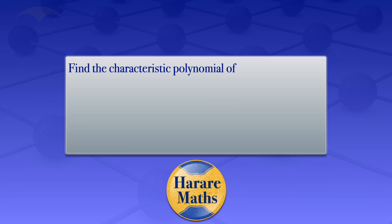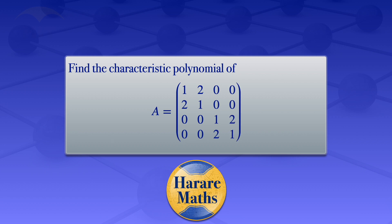In this tutorial, I'm going to find the characteristic polynomial of the 4 by 4 matrix, which has elements 1, 2, 0, 0, 2, 1, 0, 0, 0, 0, 1, 2, 0, 0, 2, 1.